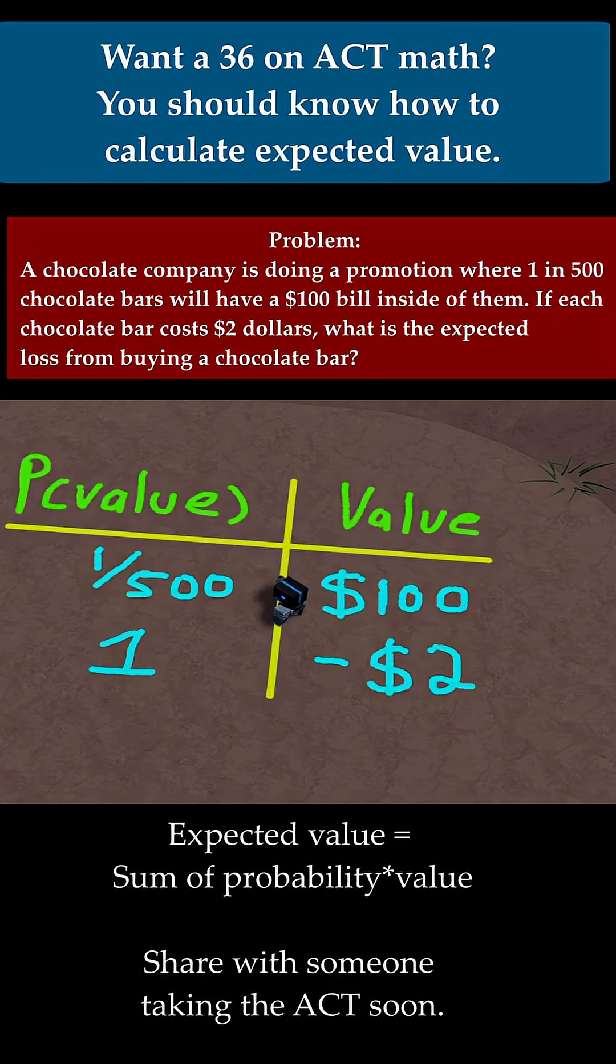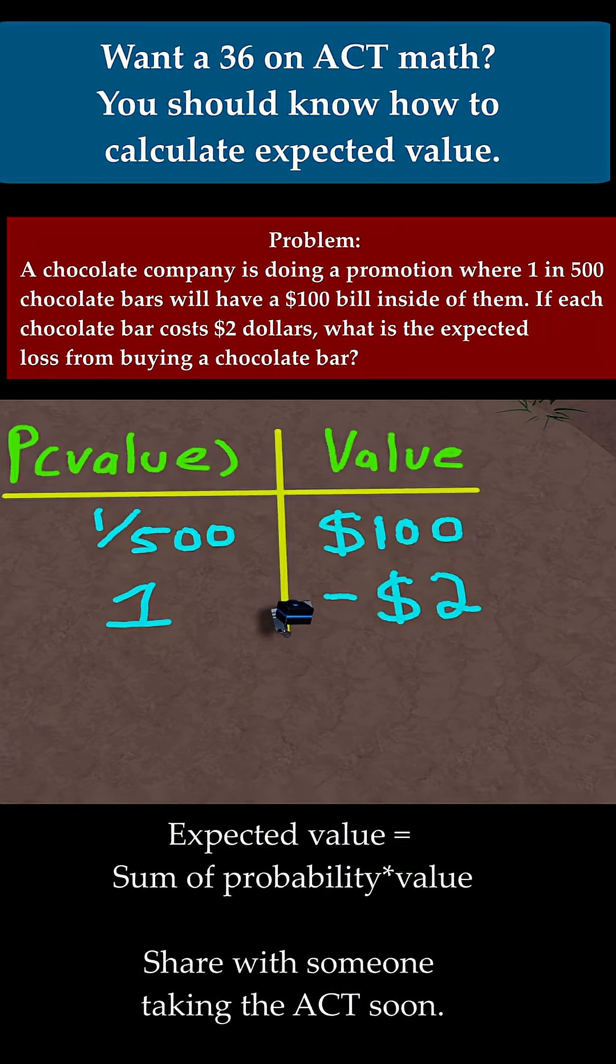And then now, all you need to do is multiply the values by the probabilities and then add them up. So let's do this here. So first, we have 1 over 500 times $100. And then we have to add that to 1 times minus $2, because you're going to lose $2 every time you buy a chocolate bar.